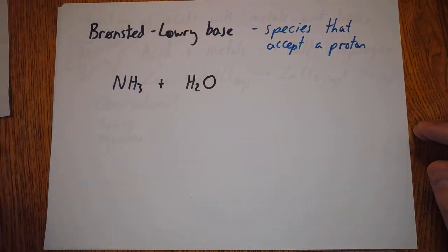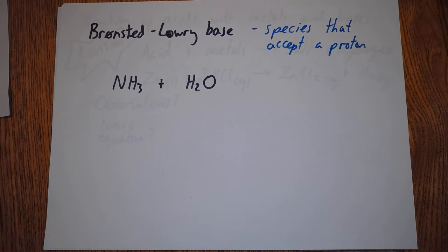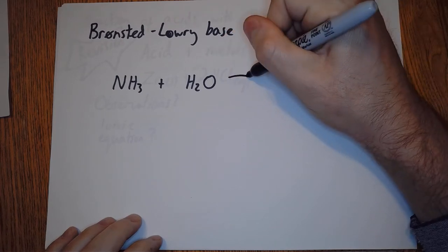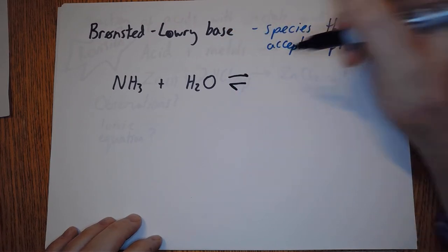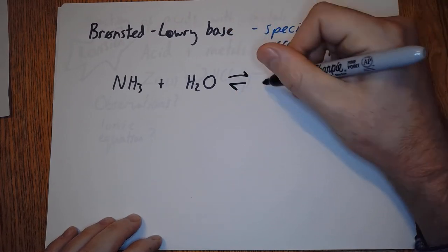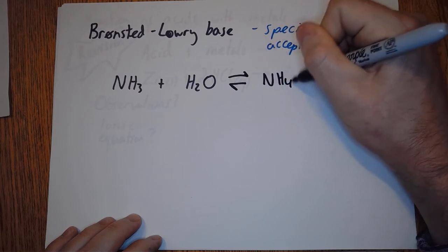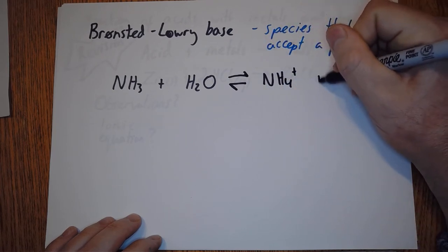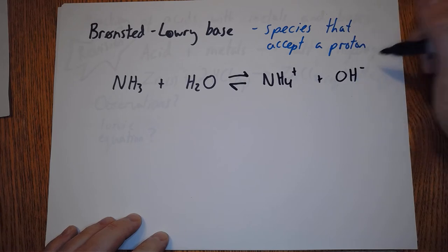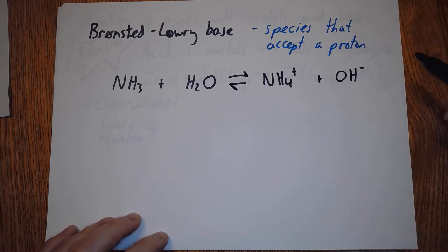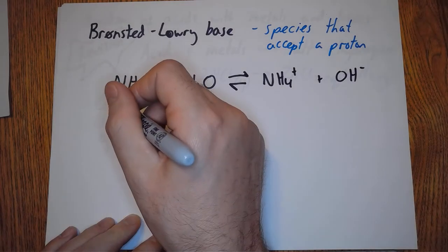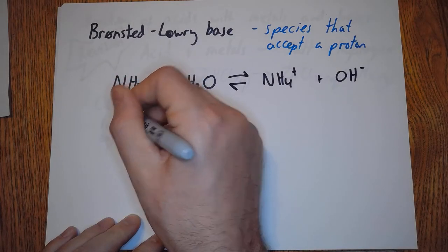The Bronsted-Lowry base, as you might expect, is a species that can accept a proton. For example, this is a reversible reaction: NH3 can accept a proton to become NH4+ and OH-. When it goes back, the NH4+ donates the H+ to go back to NH3. Because it's reversible, you can see this NH3 here is working as a base.